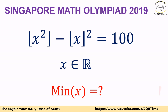Hello everyone. In this video we are going to talk about a new problem from the Singapore Math Olympiad from 2019. In this problem we have floor of x squared minus floor of x, squared, is equal to 100. We know x is a real number and we want to find the minimum possible value that we can have for x.